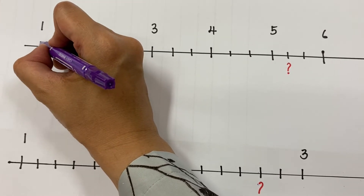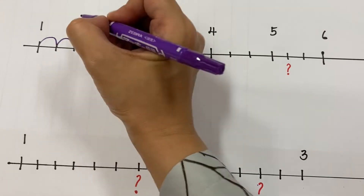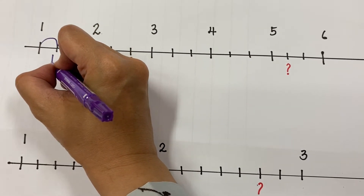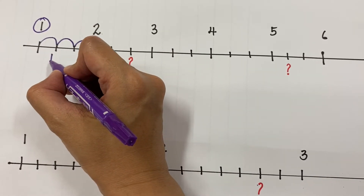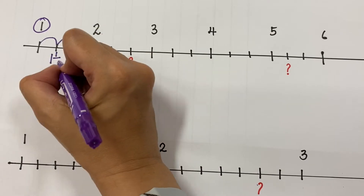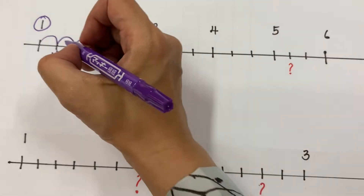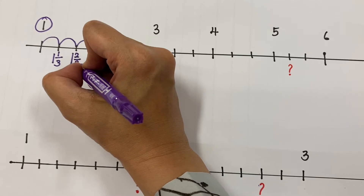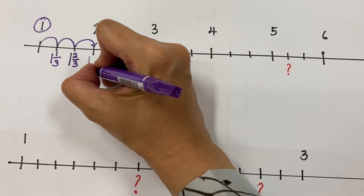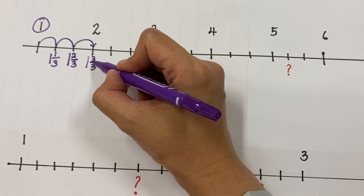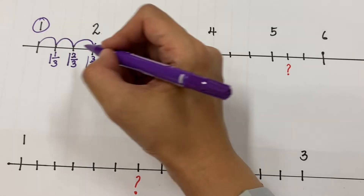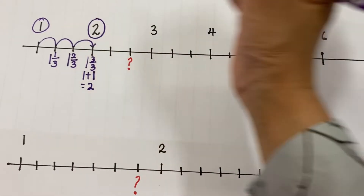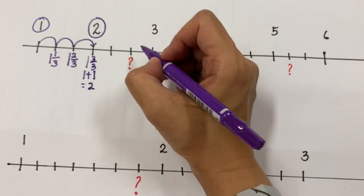You count the spaces: one, two, three — there are three spaces. So the first marking will be one whole one out of three parts, because there are three spaces. The next will be one whole two out of three parts, and then one whole three out of three. Three out of three is one whole, so one whole plus three out of three gives you two whole — that's why the next number is two.